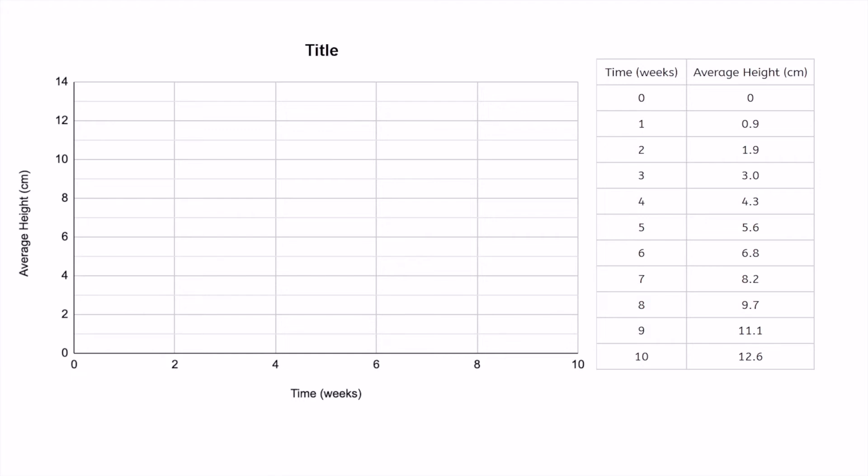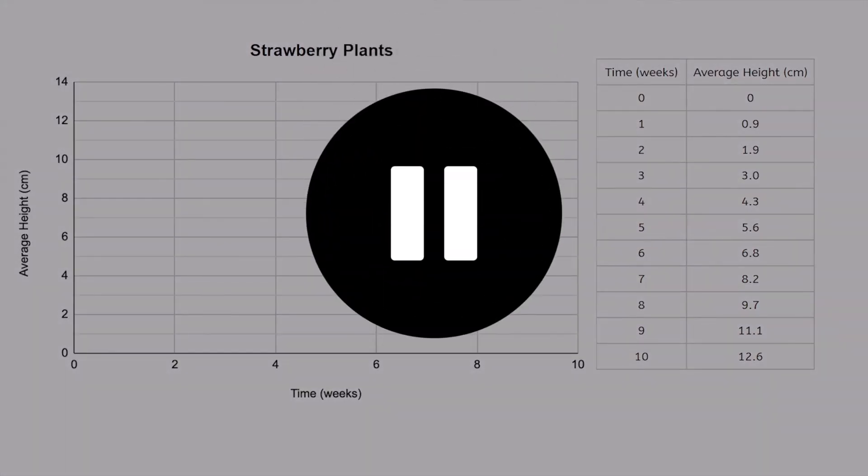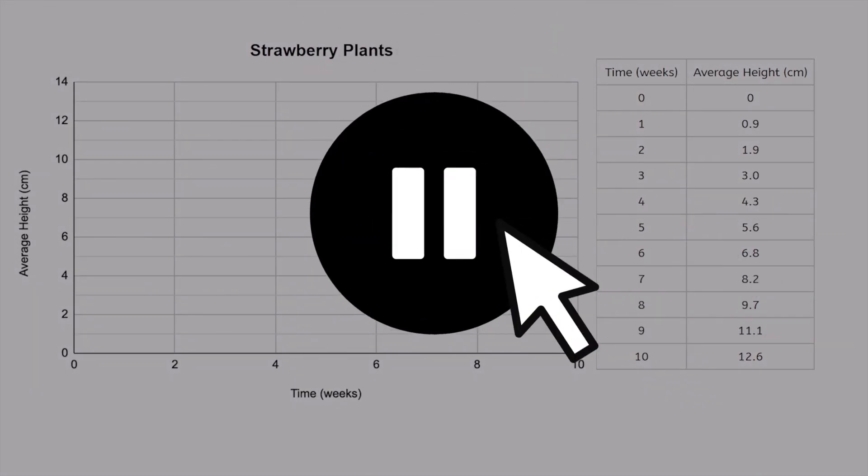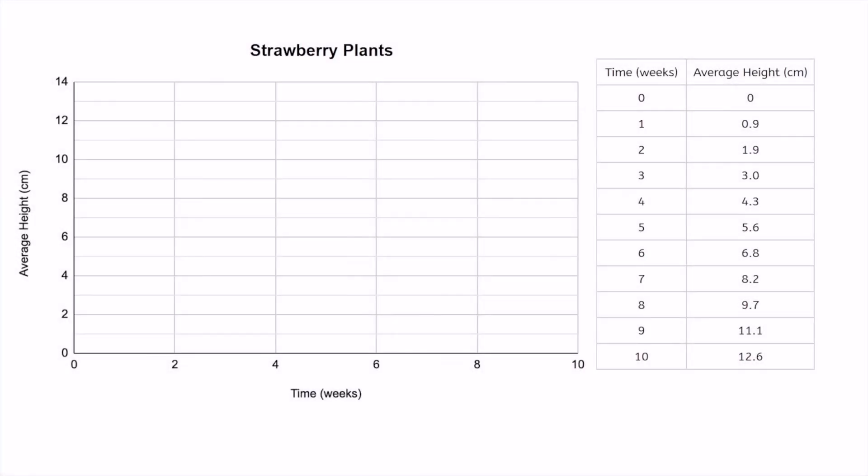The title should clearly tell anyone reading the graph what the graph is about. What if I labeled it, Strawberry Plants? Do you think this is a good title? Pause the video and write your thoughts in your guided notes. Strawberry Plants is not very specific. It makes me wonder, what about Strawberry Plants? To be more specific, we could instead title it, average height of strawberry plants over time.